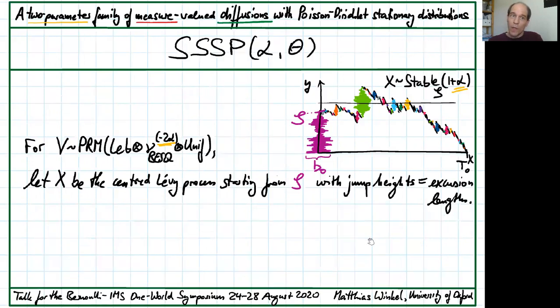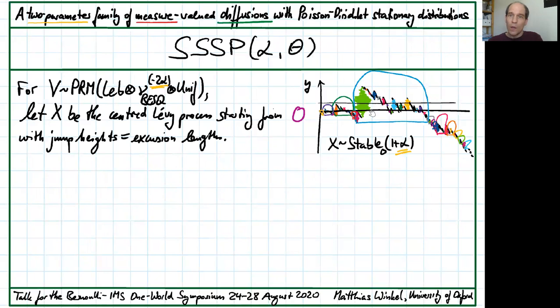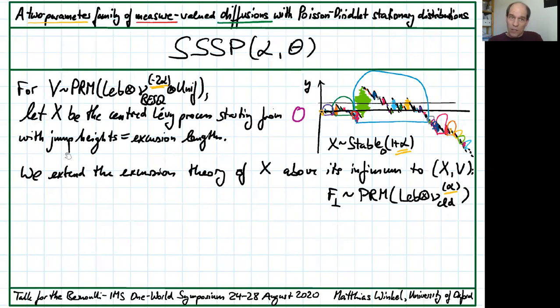What about the theta parameter? We recycle the theta equal to zero construction. We remove the initial spindle and consider the stable excursions above the running infimum. These excursions of the stable process form a Poisson random measure. We extend the excursion theory of X above its infimum by including in the Poisson random measure of excursions the spindles and color marks in each excursion. These are part of the Poisson random measure of spindles V.